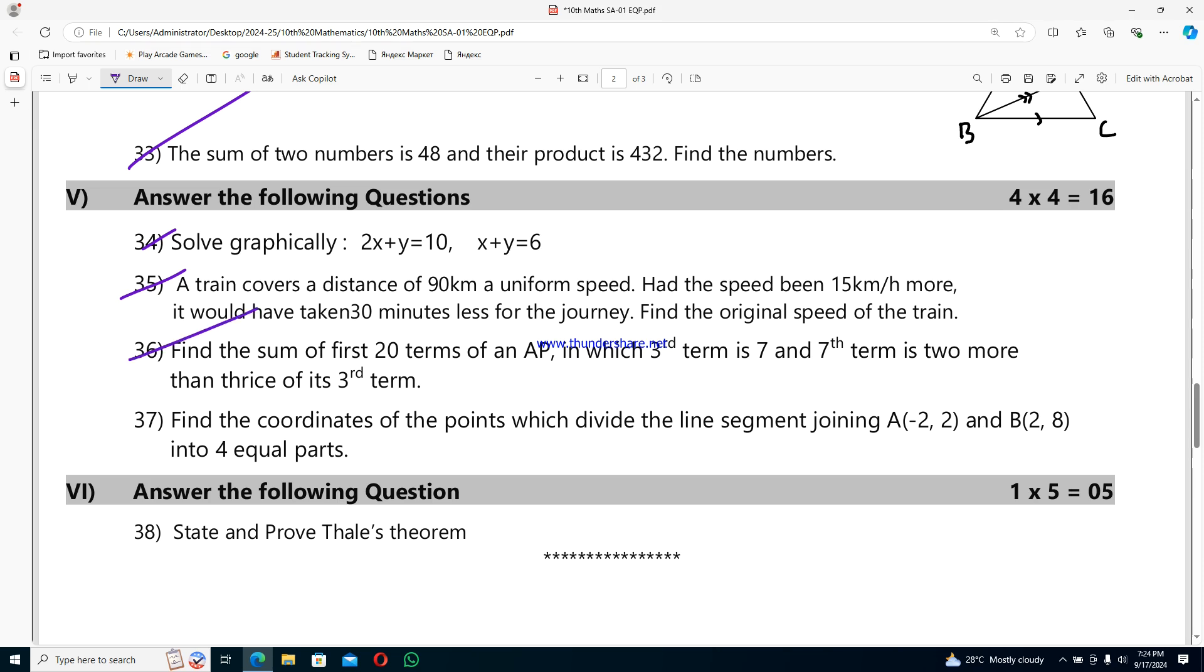Question 35: find the sum of the first 20 terms of an AP in which third term is 7 and seventh term is 2 more than thrice of its third term. Question 36: find the coordinates of the points which divide the line segment joining A(-2,2) and B(2,8) into 4 equal parts.